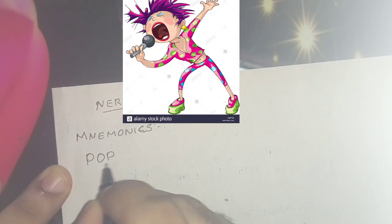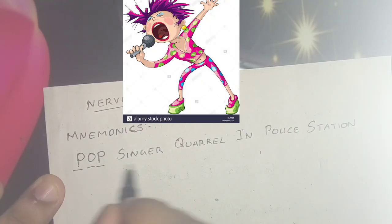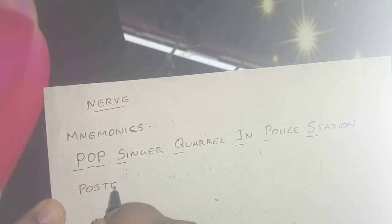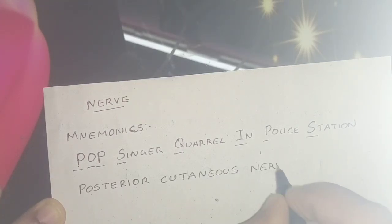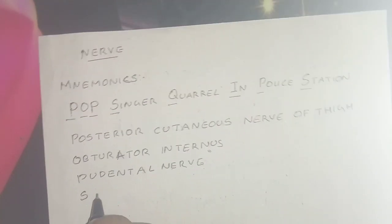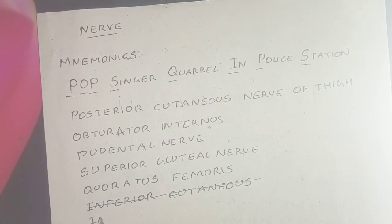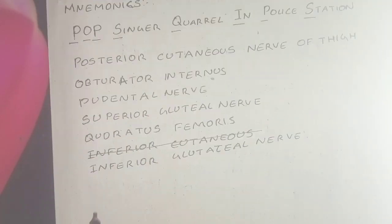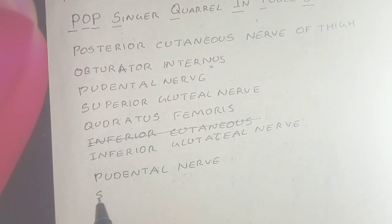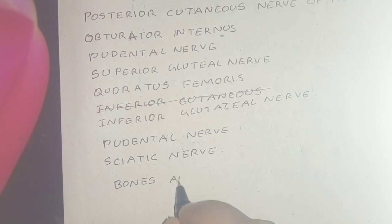For the nerves, the mnemonic is 'Bob Singa Coral In Police Station.' P stands for posterior cutaneous nerve of the thigh, O for nerve to obturator internus, P for pudendal nerve, S for superior gluteal nerve, Q for nerve to quadratus femoris, I for inferior gluteal nerve, P for pudendal nerve, and S for sciatic nerve.